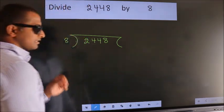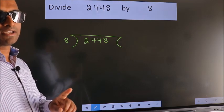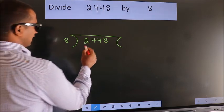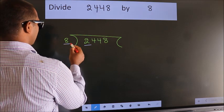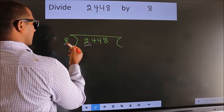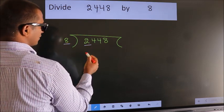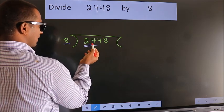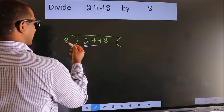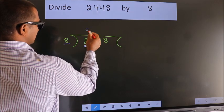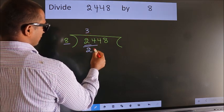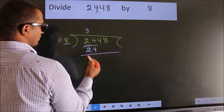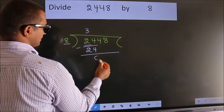This is your step 1. Next, here we have 2, and here 8. 2 is smaller than 8, so we should take 2 numbers: 24. When do we get 24 in the 8 table? 8 threes are 24. Now we should subtract. We get 0.